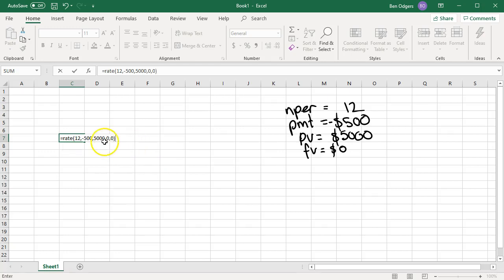remembering that if your future value and your type are both 0, you don't have to type them in. Enter, and we get a value of 3%.